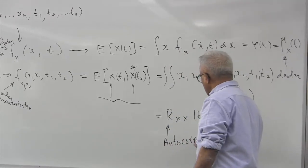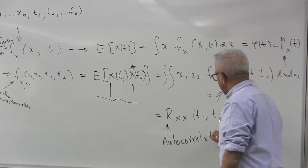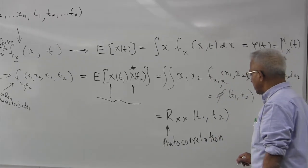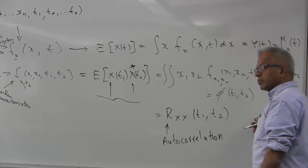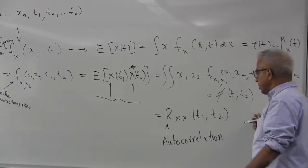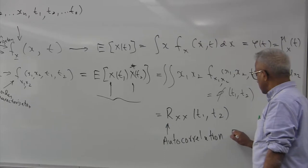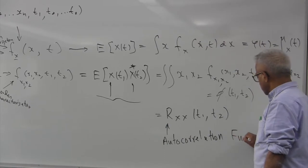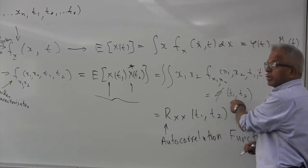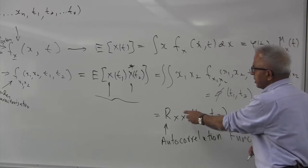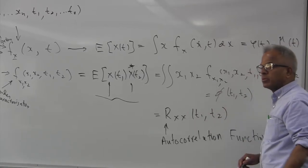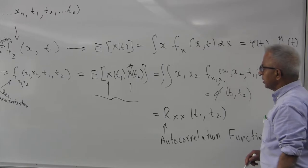This is actually the correlation that we have studied, or correlation or covariance. From here, if you subtract the product of the means, you get the autocovariance function. The important thing to remember is that in the previous case (random variables) this was not a function of time, but here it is a function of two time variables, t1 and t2.